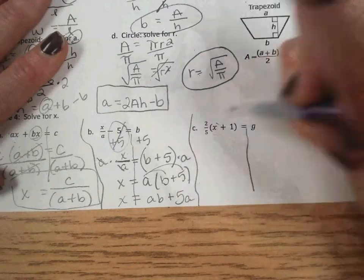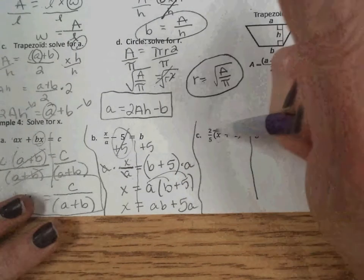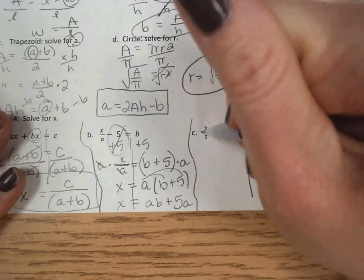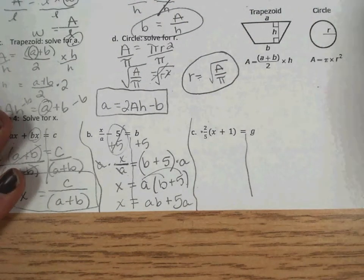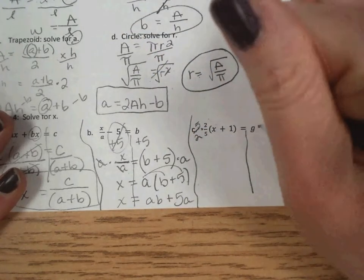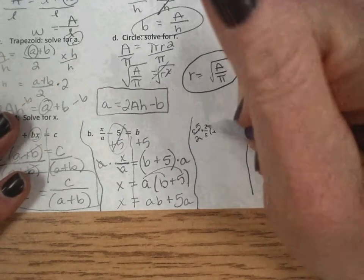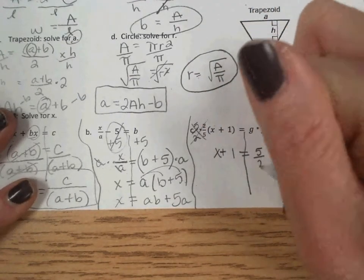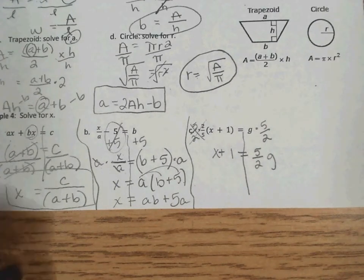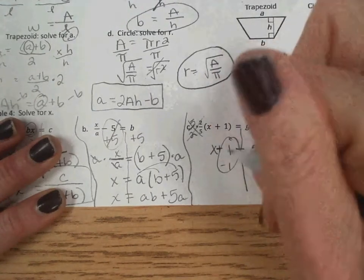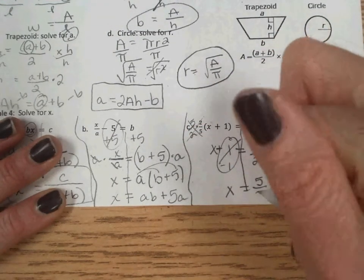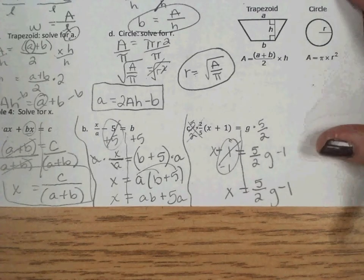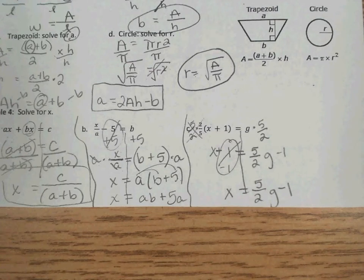Last one. Solving for x here. So the way that we'd want to do this one, rather than start by distributing, which might be your go-to thought, let's get rid of the 2 fifths first. And to get rid of 2 fifths, similar to what we talked about in the 1.2 notes, we multiply by the reciprocal. We multiply by 5 halves. Because the number times its reciprocal is 1. So then we're just left with x plus 1 equals 5 halves g. Just subtract 1 from both sides. So x equals 5 halves g minus 1. And that concludes our notes for 1.4 solving equations.